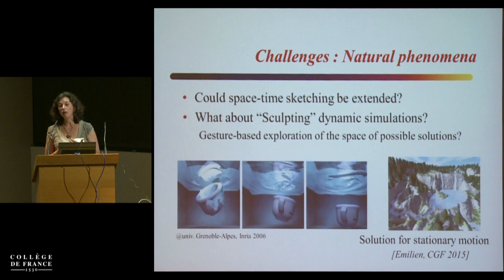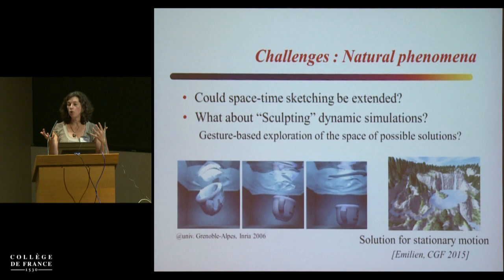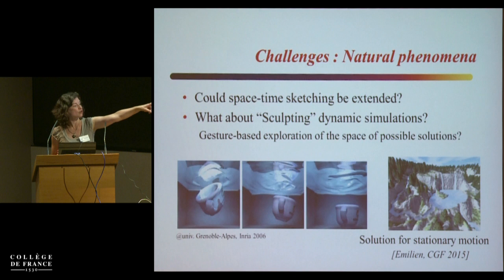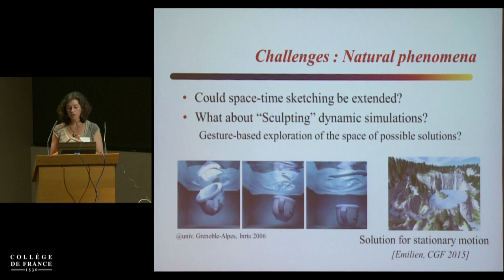There was already a nice paper from Chris Vauchan at SIGGRAPH last year, interpolating between several physically-based animations — this is a start, though it was only for fluid animation. We also had a solution in our group on the design of waterfalls, where the user can give a coarse sketch and we solve for a waterfall. But this is only for stationary motion which is always the same in time, so can we do that for more general natural phenomena?